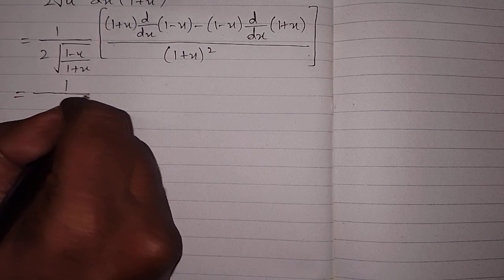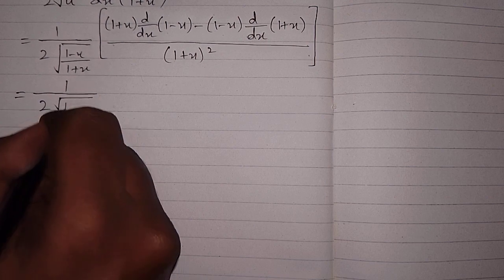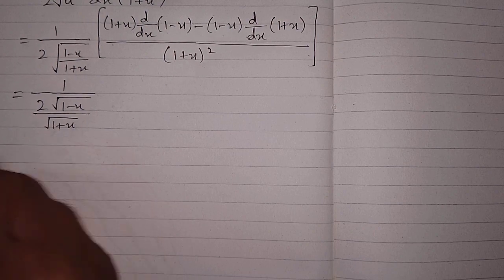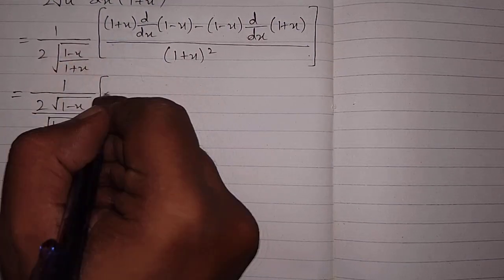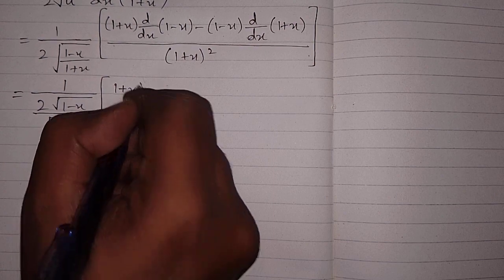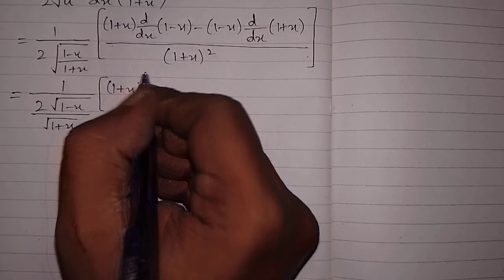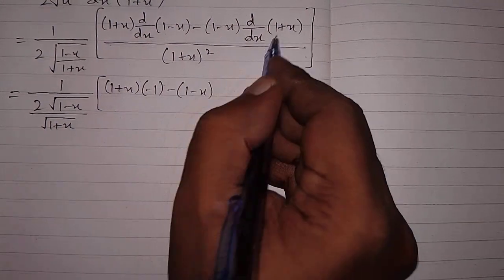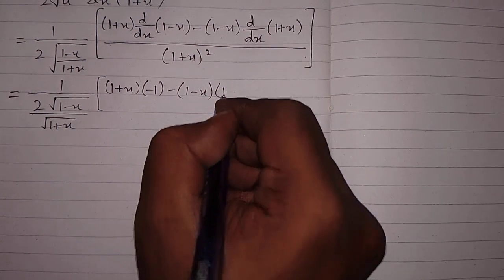This can be written as 1 / (2√((1 - x)/(1 + x))). For the numerator: (1 + x) times the derivative of (1 - x) — the derivative of 1 is 0 and the derivative of -x is -1, so we write -1 — then (1 - x) times the derivative of (1 + x), where the derivative of 1 is 0 and the derivative of x is 1.